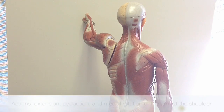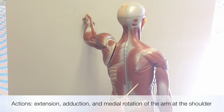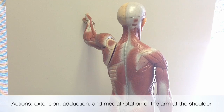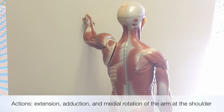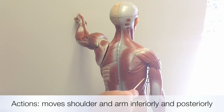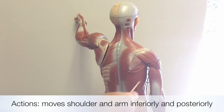The actions of the latissimus dorsi include extension, adduction, and medial rotation of the arm at the shoulder. Adduction is bringing the arms back into the sides of the body. Medial rotation is where the arm rotates to the median or midline of the body. The latissimus dorsi also moves the shoulder and arm inferiorly, or downward, and posteriorly, or backwards.